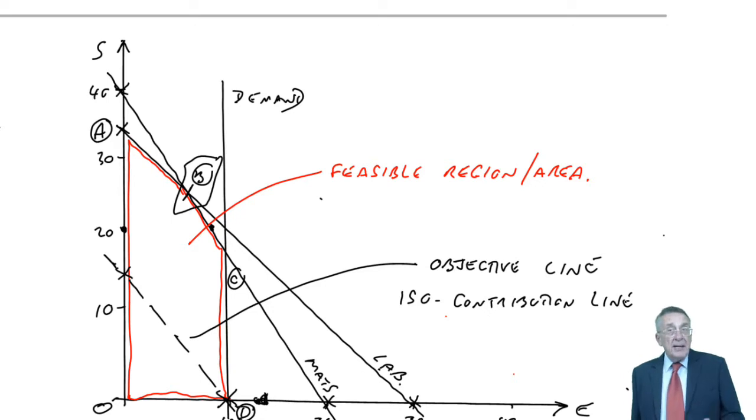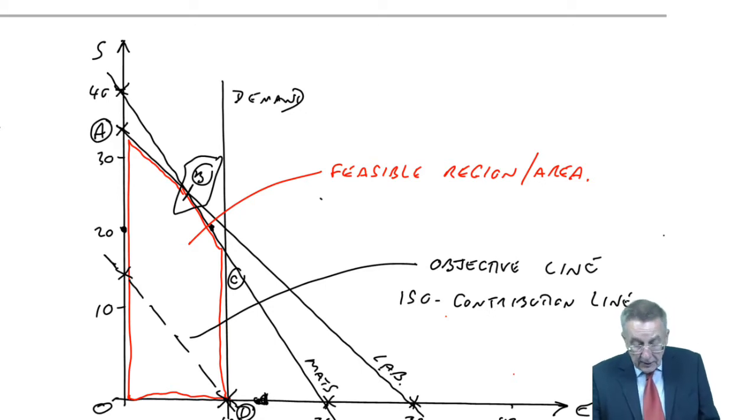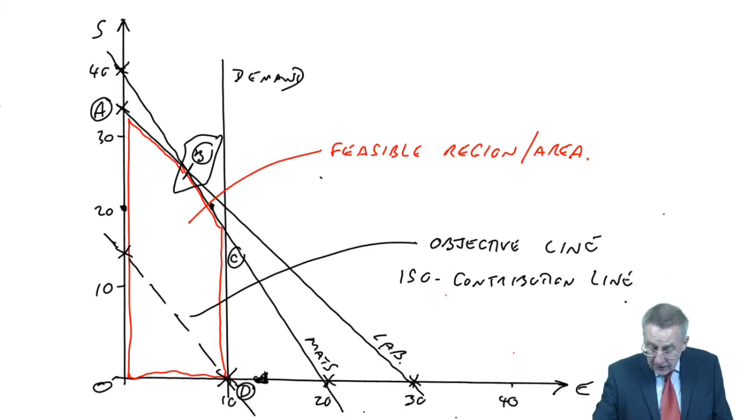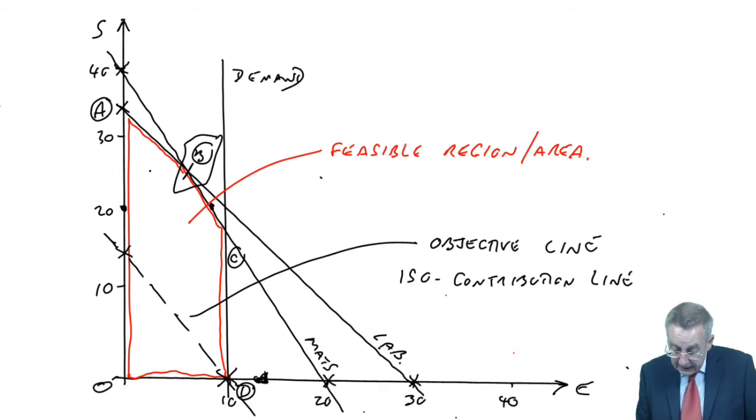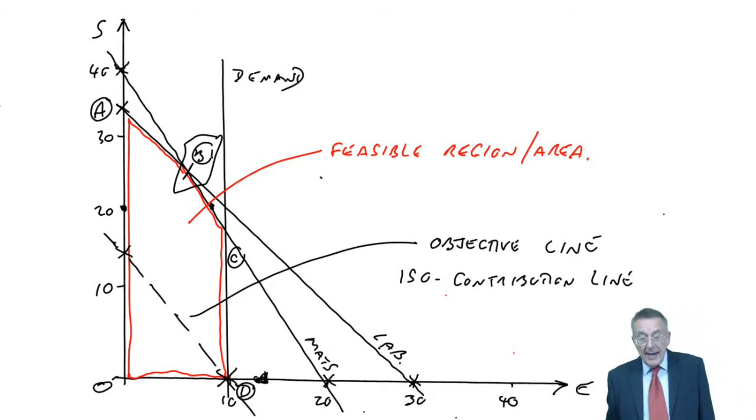So I do now know that maximum contribution will occur at point B. But of course we do need to know how many units of S and E is that? From the graph, bearing in mind mine's not perfectly accurate, it looks as though it's about somewhere around 5 E's and 25, 26 S's.